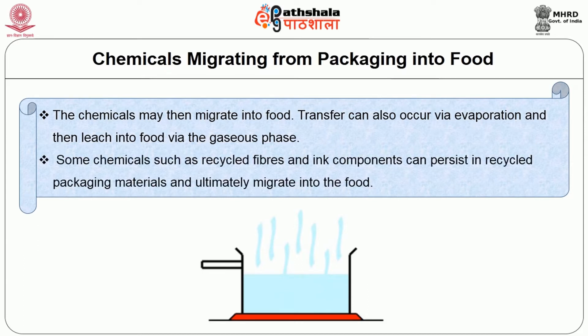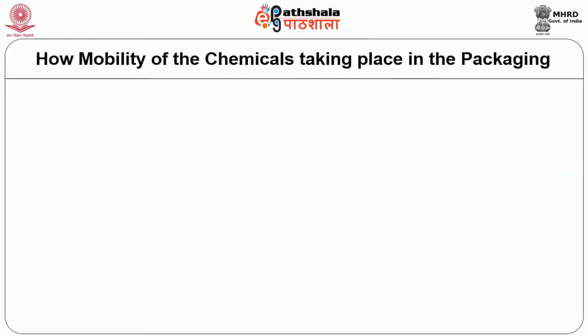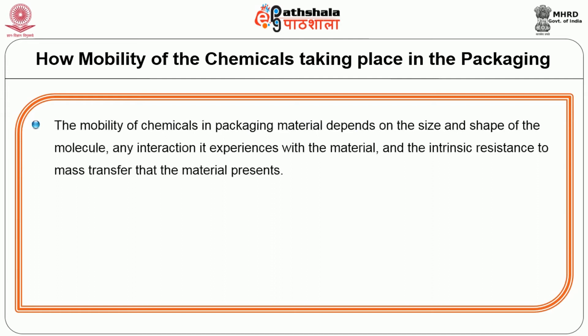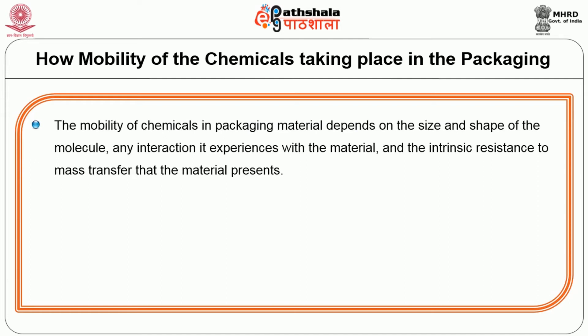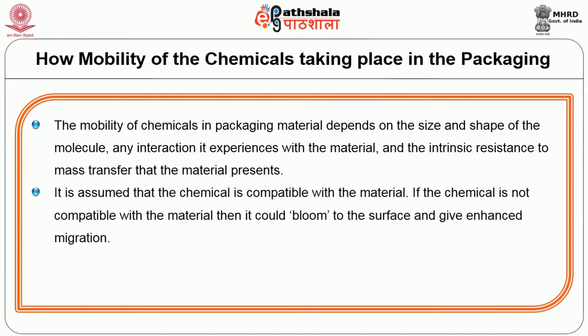Some chemicals such as those in recycled fibers can persist in recycled packaging materials and ultimately migrate into food. The mobility of chemicals in the packaging material depends on the size and shape of the molecule, any interaction it experiences with the material, and the intrinsic resistance to mass transfer that the material presents. It is assumed that the chemical is compatible with the material. If the chemical is not compatible, then it could bloom to the surface and give enhanced migration.